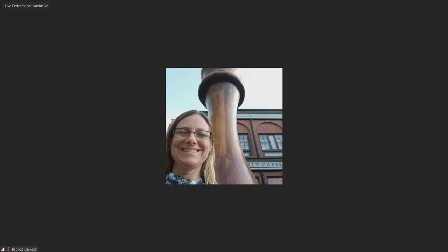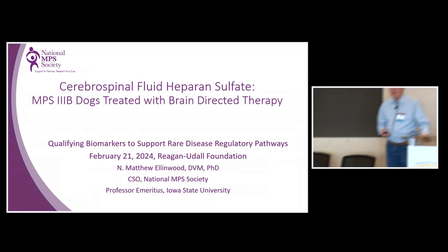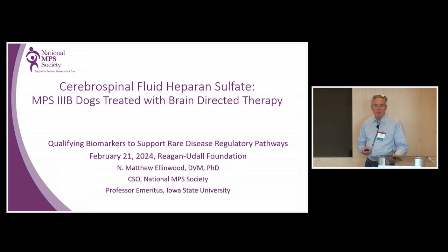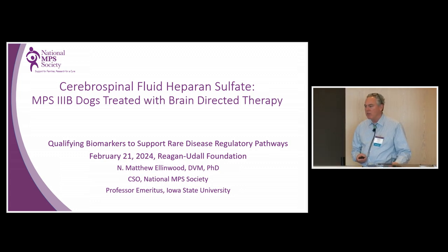I'll just note that you continue our on-time performance of our speakers. We will see Dr. Dixon again for the panel discussion after the next five speakers. Dr. Ellenwood, you are next up, joining us as the Chief Scientific Officer with the National MPS Society. I'm very pleased to be here. I'd like to thank the Reagan-Udall Foundation for the opportunity to speak to you. I am a comparative medical geneticist and I've been working in the field for a quarter of a century, now at the National MPS Society after nearly a 20-year academic career on large animal models.